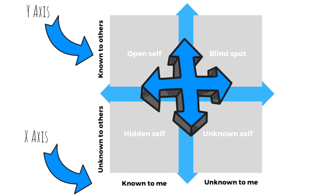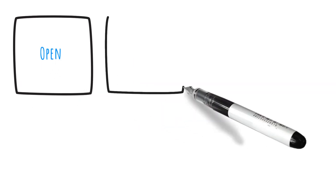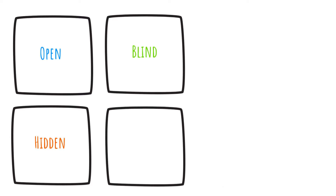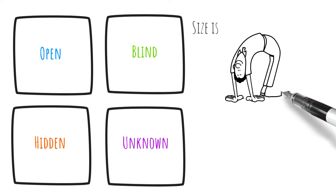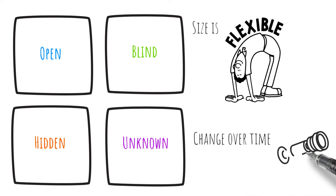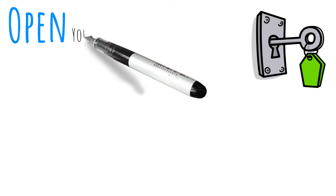Combining these dimensions results in four quadrants or areas of self-awareness. The four quadrants are commonly known as open, blind, hidden and unknown. The size of the panes or quadrants is flexible and should change over time. Your ultimate aim is to increase the size of your open area by reducing the others through self-disclosure, discovery and feedback.